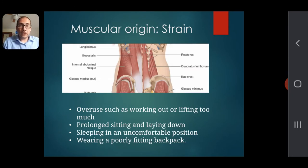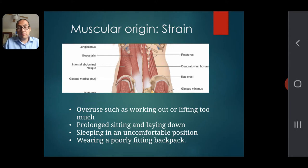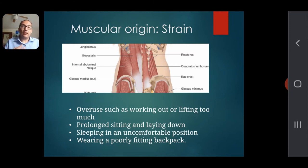Muscular strain or tendon strain occurs when you pull a muscle through various means. Overuse and overworking is one way — lifting too much or working out for too long. Sitting for long periods of time or laying down for extended periods can also cause pain in the muscles of the low back, as can sleeping in an uncomfortable or wrong position.